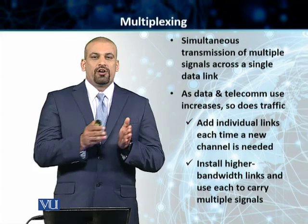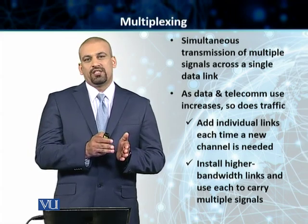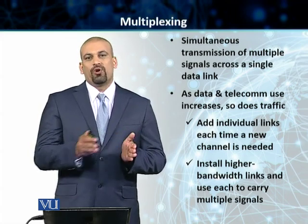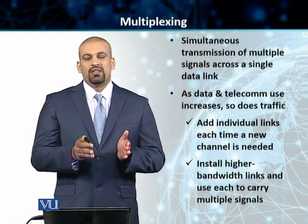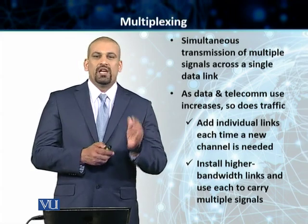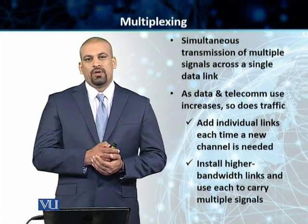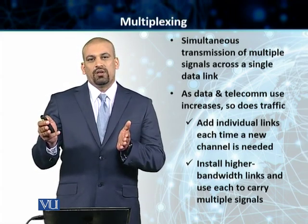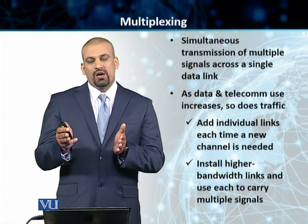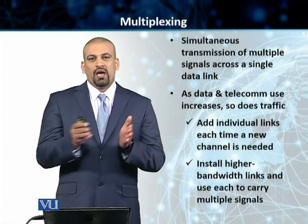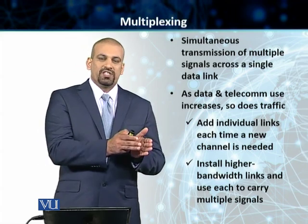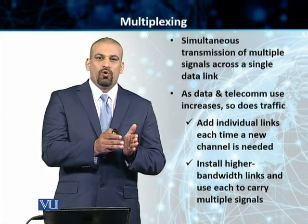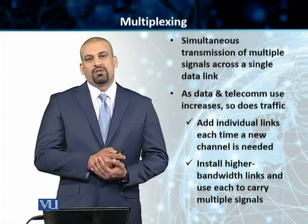Normally, the transmission signals that we need to transmit from point A to point B have a very low bandwidth requirement. So our link has a higher bandwidth available, while our individual signals that need to be transmitted have a very low bandwidth requirement.